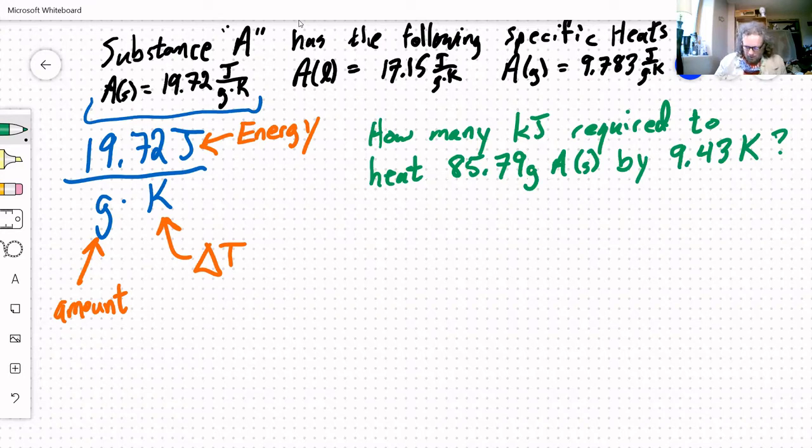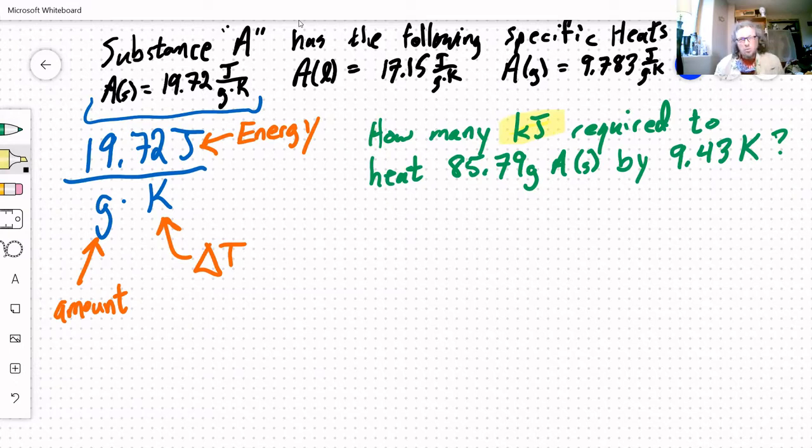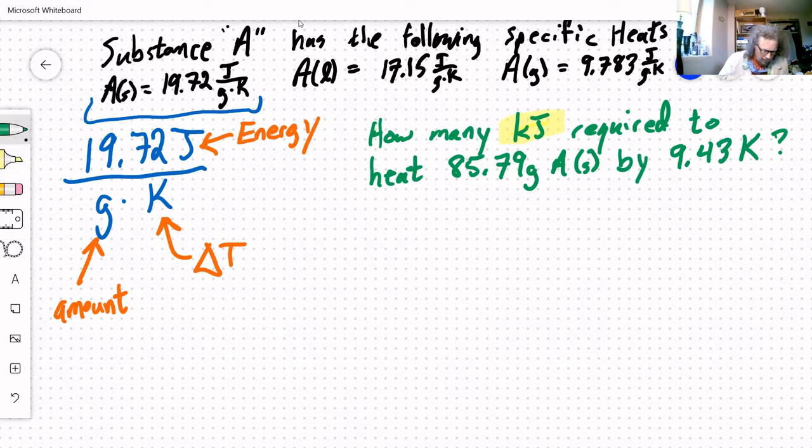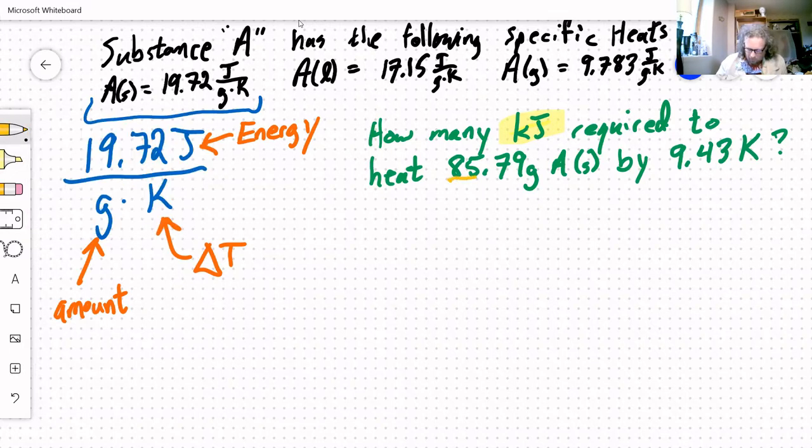So what do we have? I want to know kilojoules. That's what I'm searching for in this problem. And I'm given grams, an amount, and I'm given a delta T, a change in temperature.